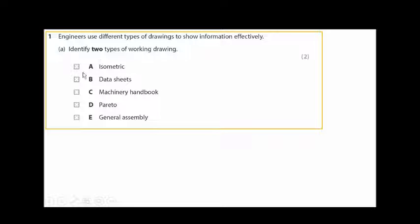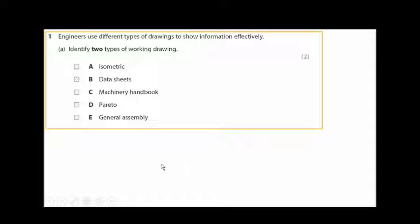Welcome back to part 2 of this video. This is topic A1, Types of Working Drawings, Unit 9 of BTEC Level 2 in Engineering. In part 1 of this video, we've seen the different types of working drawings. These are some actual exam questions from past papers on this topic.